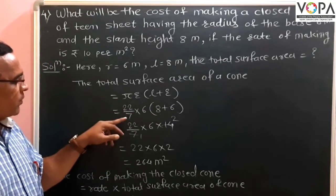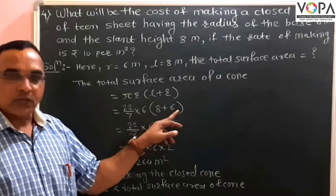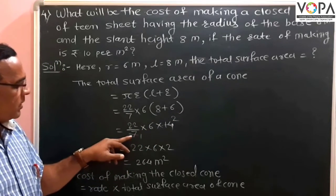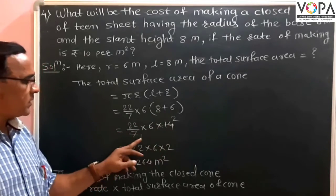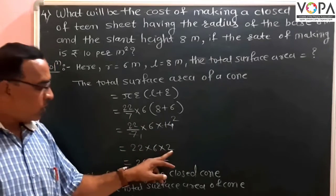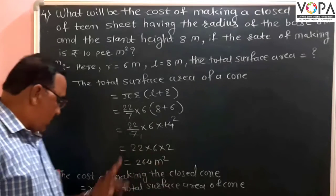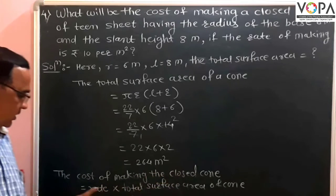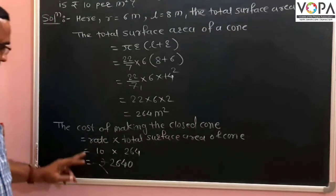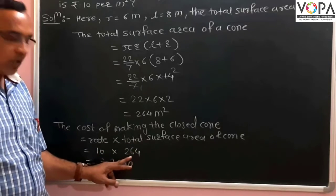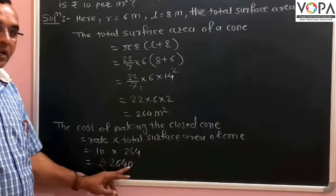Putting in the values: total surface area = (22/7) × 6 × (8 + 6) = (22/7) × 6 × 14 = 22 × 6 × 2 = 264 m². The cost of making the closed cone equals rate multiplied by total surface area = 10 × 264 = Rs 2640. That is the total cost of making the closed cone.